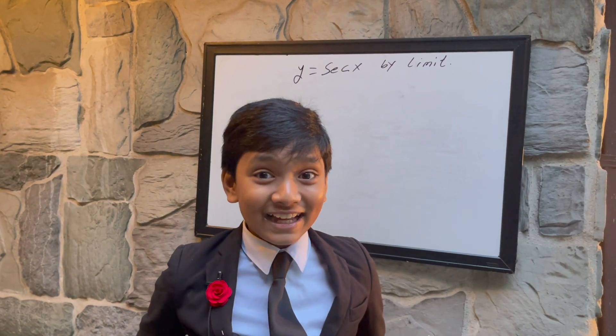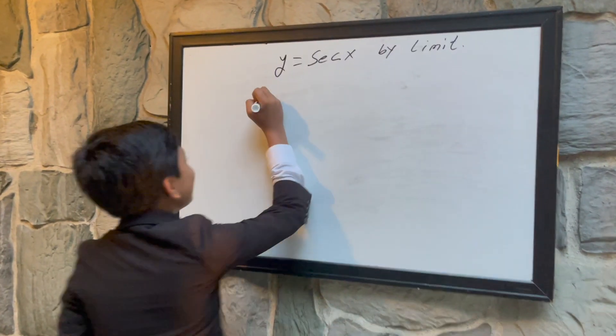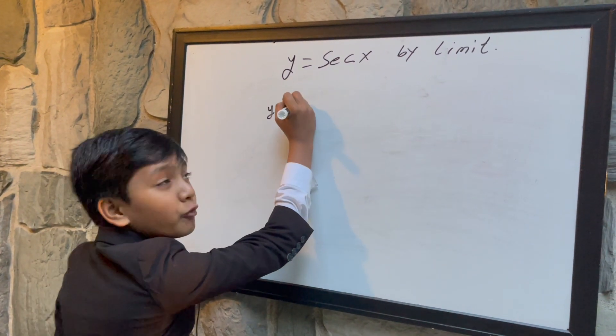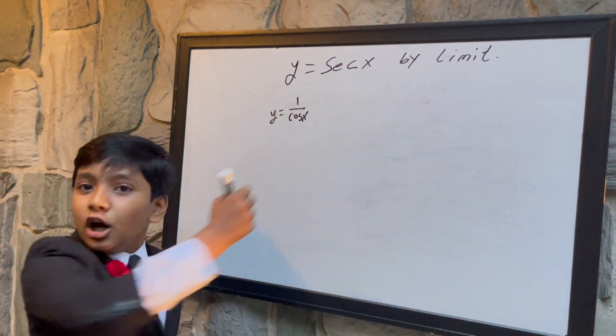Secant of x is equal to 1 over cosine of x. So, that means that we are taking the derivative of 1 over cosine of x.